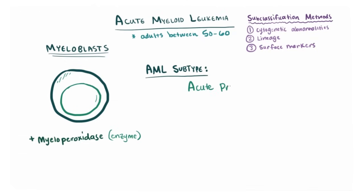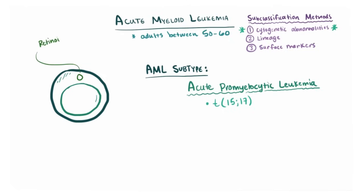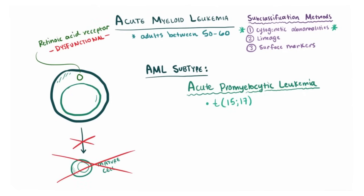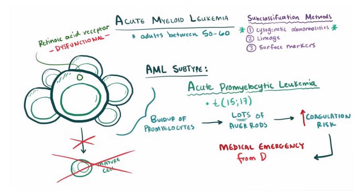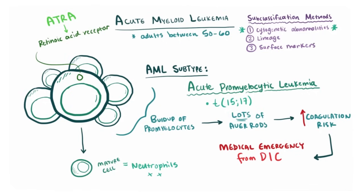One important subtype of AML is acute promyelocytic leukemia, characterized by translocation of chromosomes 15 and 17 (t15;17). This translocation disrupts the retinoic acid receptor, hurting the cell's ability to mature, causing a buildup of promyelocytes. These cells tend to have many Auer rods, which increases coagulation risk, making it a medical emergency due to the risk of disseminated intravascular coagulation (DIC). Treatment involves all-trans retinoic acid (ATRA), a derivative of vitamin A, which binds to the disrupted retinoic acid receptor and causes blasts to mature into neutrophils, lifting the leukemic burden.